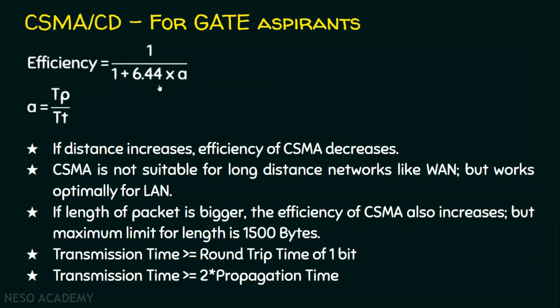A few important points to remember for GATE or analytical examinations on CSMA/CD: if distance increases, the efficiency of CSMA decreases, so CSMA is not suitable for long-distance networks like WAN — it works optimally for LAN. If the length of the packet is bigger, the efficiency of CSMA increases, but the maximum packet length limit is 1500 bytes.